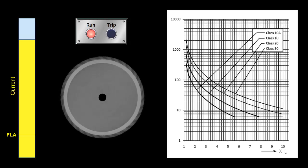So if my trip class is 10 or 10A, I'm going to run into a problem, because it's going to trip before it gets up to speed and can start pulling its nominal FLA.